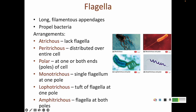Lophotrichous bacteria have a tuft — a big cluster of flagella at one location. So this bacterium is lophotrichous with that tuft of flagella, and it's also polar because the tuft is at its pole. The prefix 'amphi' means both ways — like an amphibian lives in water and on land, or someone ambidextrous can write with both hands. So an amphitrichous bacterium has flagella at both ends, and it's also polar because those flagella are at the poles.